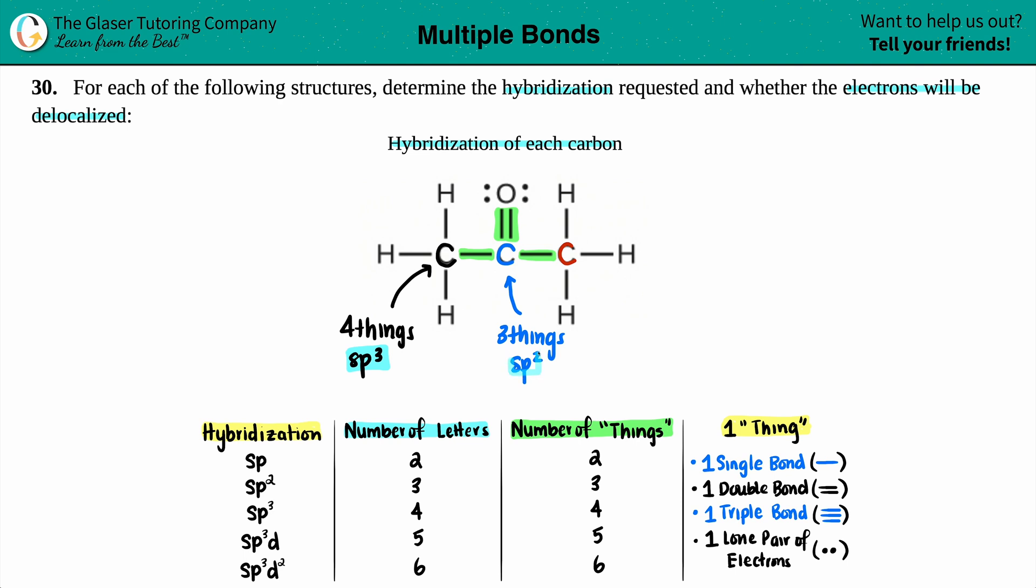Last one. Let's get rid of these colors just to not be confusing. Now let's do this carbon. What's going on? It's got one single bond, that's one thing. Another single bond, that's two things. Another single bond, that's three things. And finally, another single bond, that's four things around the carbon. No lone pairs. So four things, four letters, just like the first one. This is SP3. So basically we finished the first part of the question. We wanted to know all the hybridizations of each carbon.